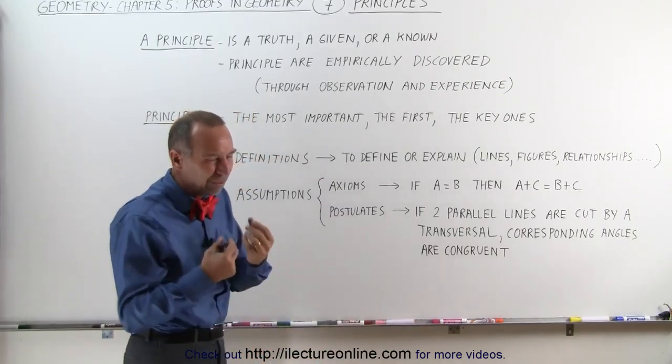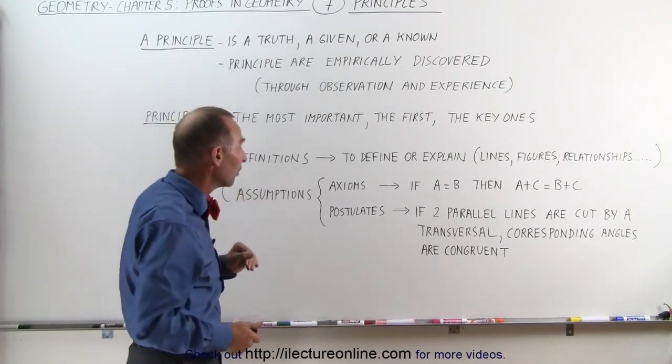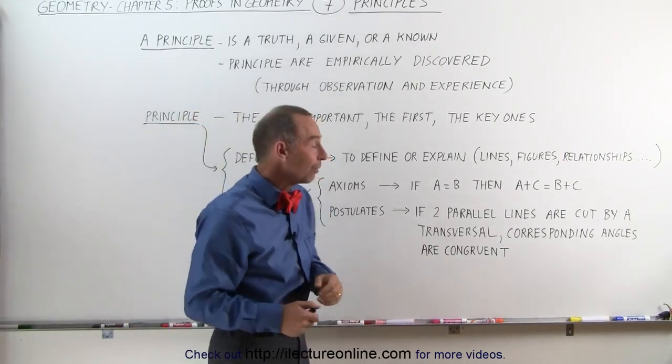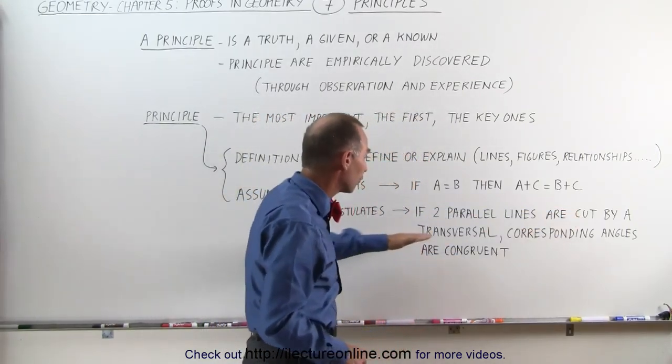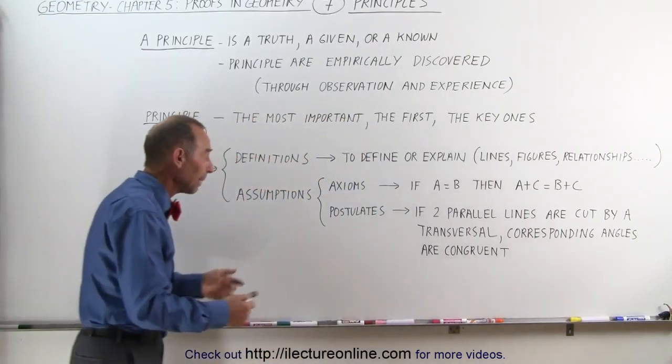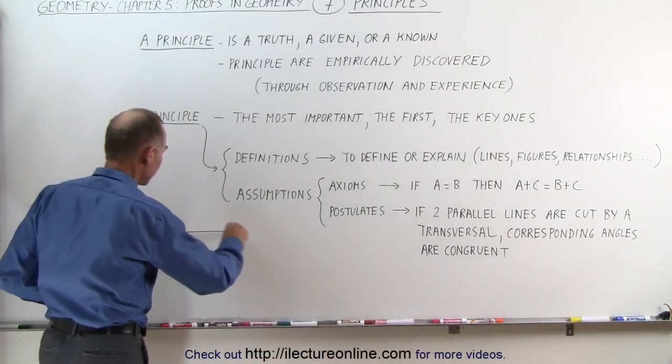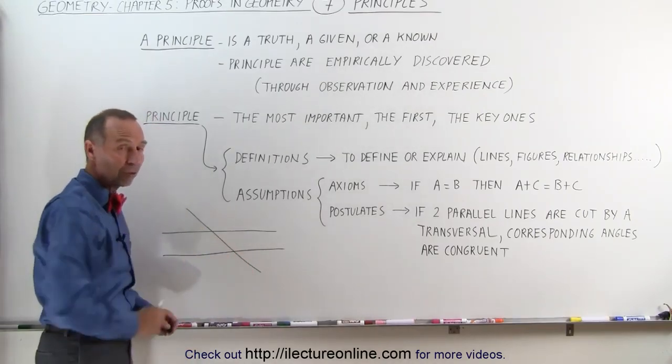Postulates, specific to geometry, which again, it's an assumption, which is what we call a principle. Here's a good example of one. If two parallel lines are cut by a transversal, corresponding angles are congruent. We know that by experience. For example, here's one line, and here's a second parallel line. If we now draw another line across these two, this is called a transversal,